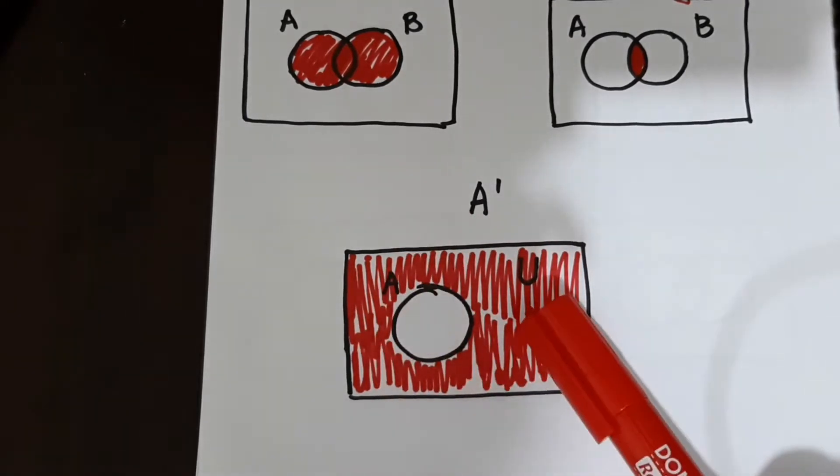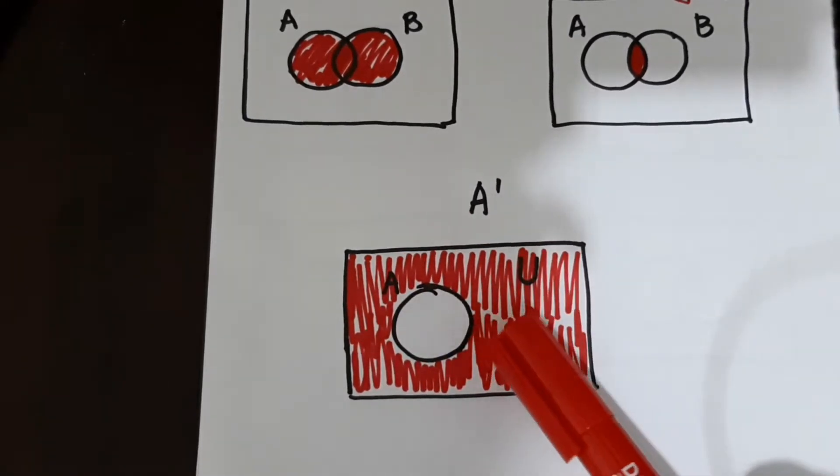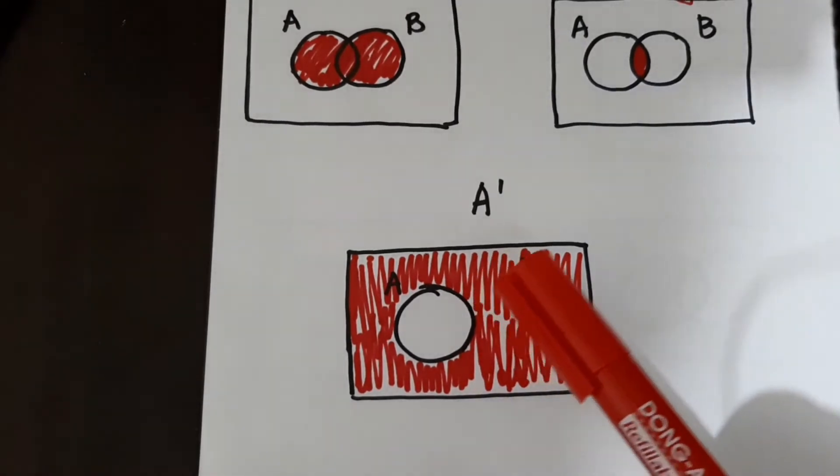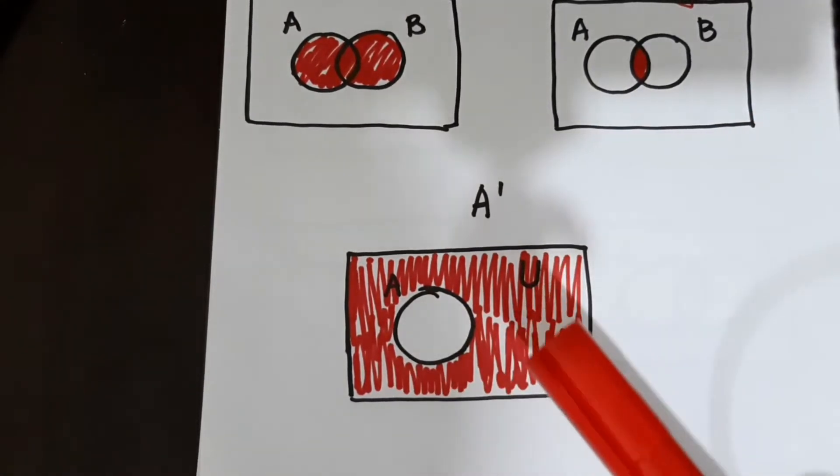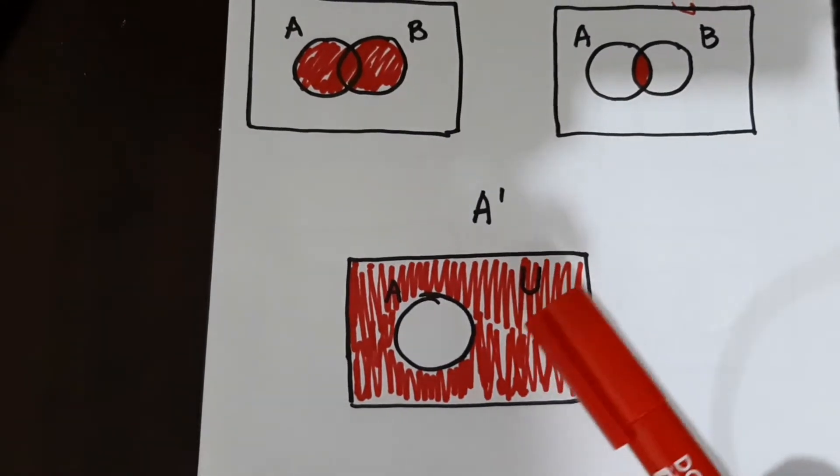So lahat ng sets, kung ano man ang kasali dito, for example kung tatlong sets to, yung A lang, yung set A lang talaga ang walang shade. So another term is not A.